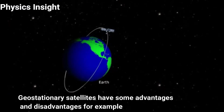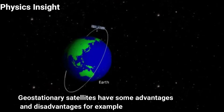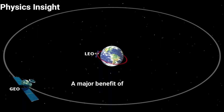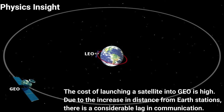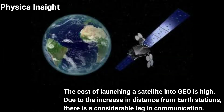A major benefit of the geostationary orbit is that Earth stations can remain stationary — they don't have to track satellites continuously. Moreover, the coverage area from this altitude is quite good. However, the cost of launching a satellite into GEO is high, and due to the increased distance from Earth stations, there is a considerable lag in communication.